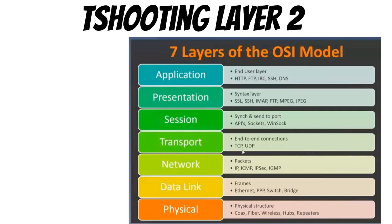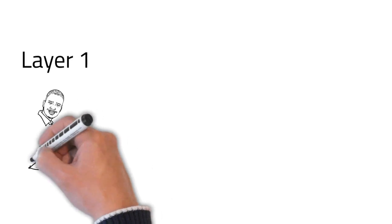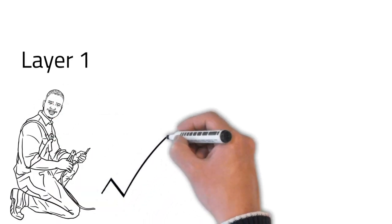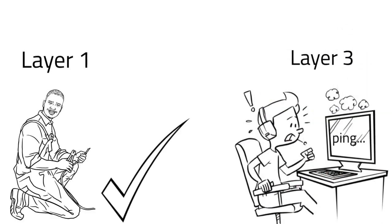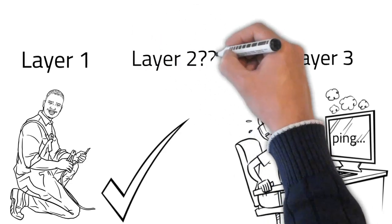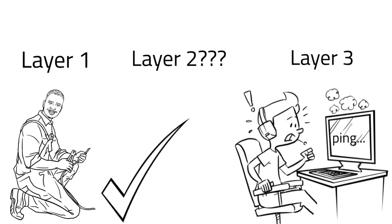Now for the bonus troubleshooting tip for layer 2 devices. When I first began networking, I was taught to work the OSI model from the bottom up to isolate connectivity issues. Layer 1 and layer 3 were easy for me to understand when troubleshooting, but you can't skip layers. If you're troubleshooting layer 1, the next layer is layer 2, then layer 3. You have to work sequentially — either bottom up or top down.